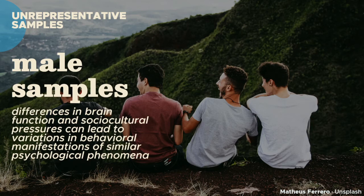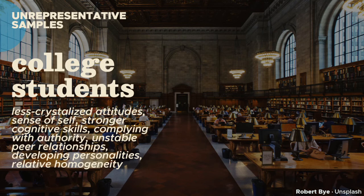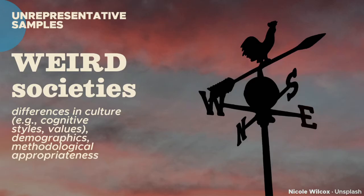Third, college students get top billing for being the most studied subpopulation in the world. Because they're the most accessible and participate out of course requirements, college samples become the basis on which principles across psychological disciplines are typically built. The problem is that the experience of being in college isn't generalizable — these students tend to have developing attitudes, sense of self, and long-term relationships, have stronger cognitive skills, and are more likely to comply with research expectations, thus more likely supporting the study's hypothesis. Finally, WEIRD societies — Western, Educated, Industrialized, Rich, and Democratic — are the minority in the global population yet dominate psychological research, despite challenges from indigenous and cultural psychology to the universality of Western cognitive styles, values, and priorities, and the possible inappropriateness of methodologies, constructs, and theories in non-WEIRD or majority world societies.